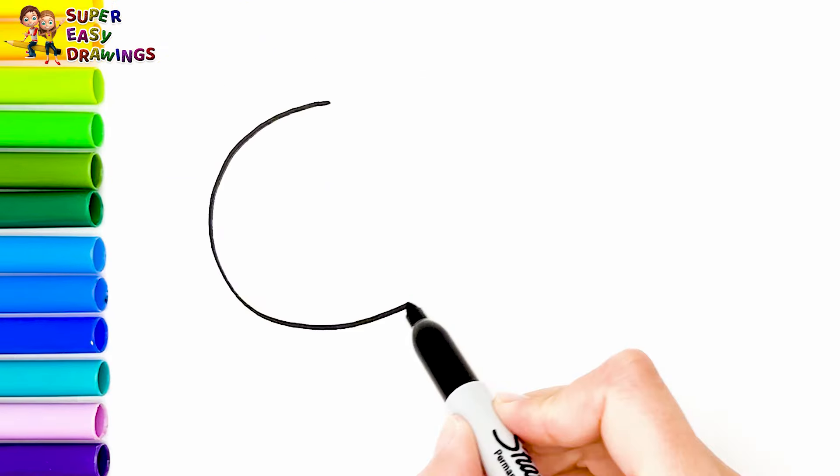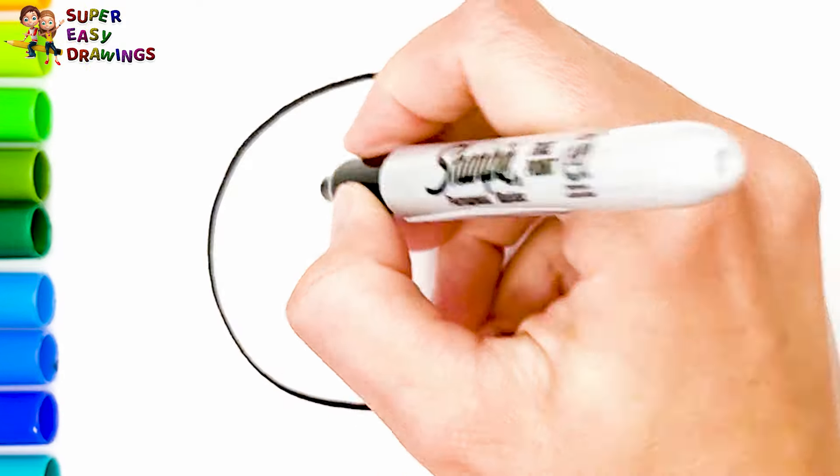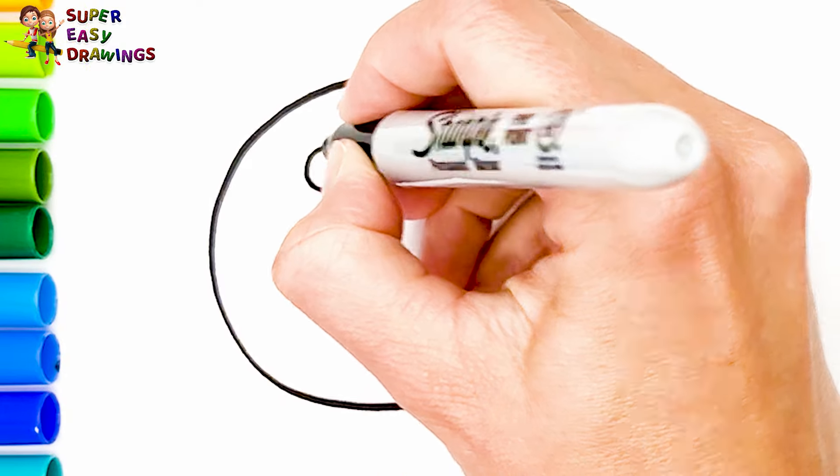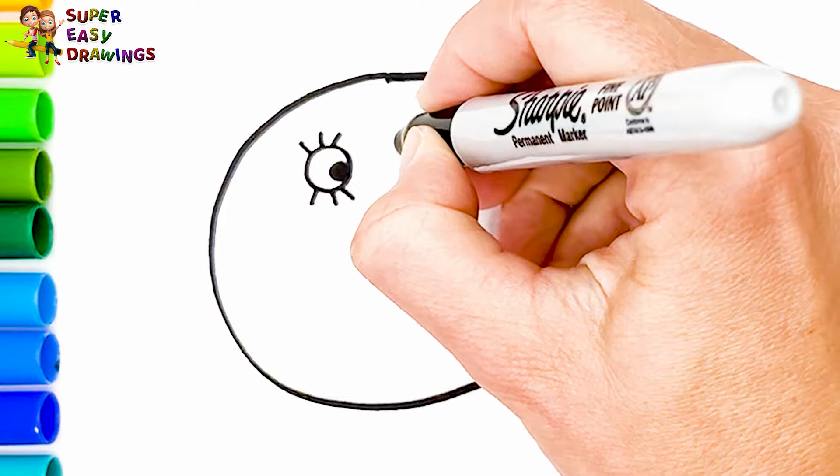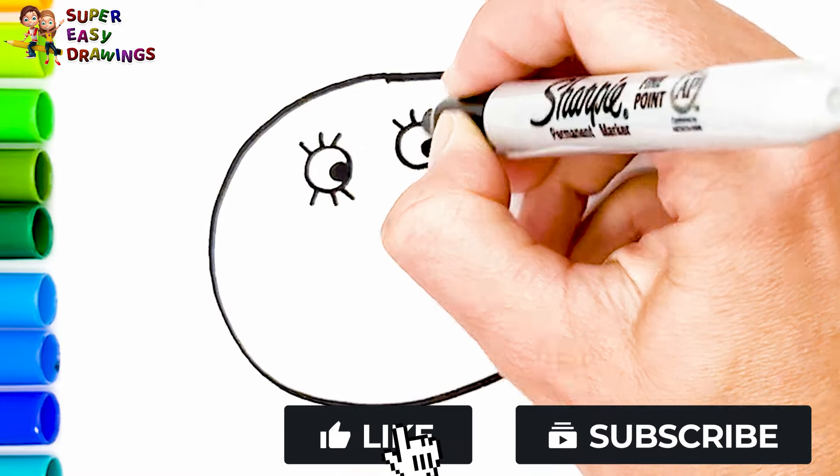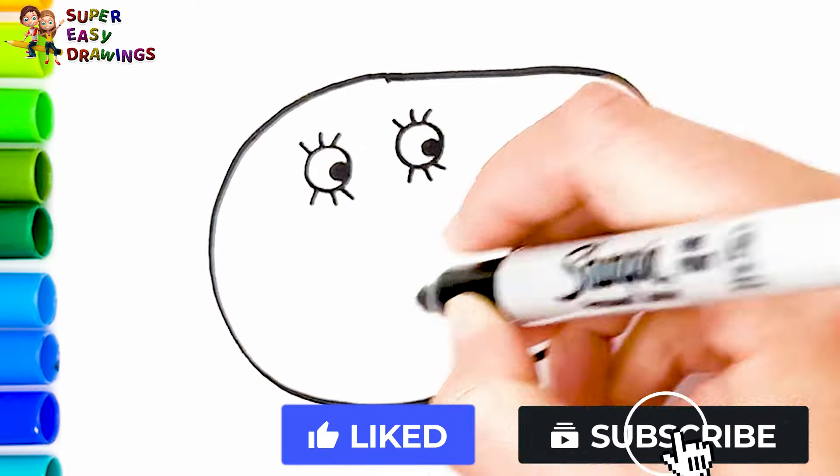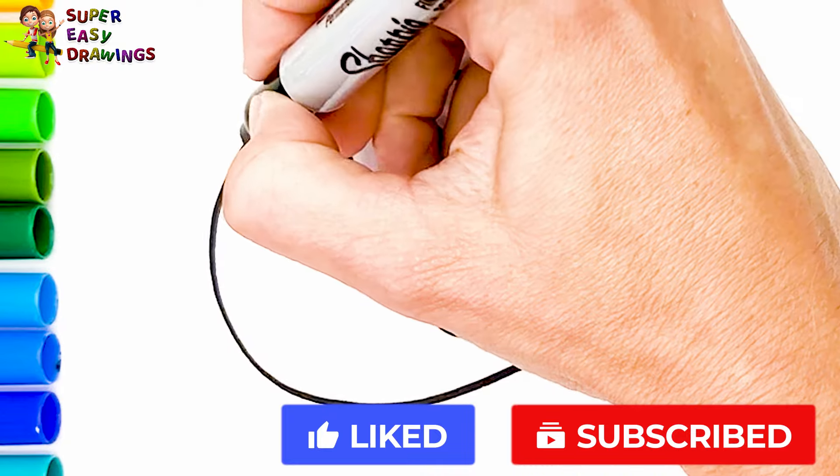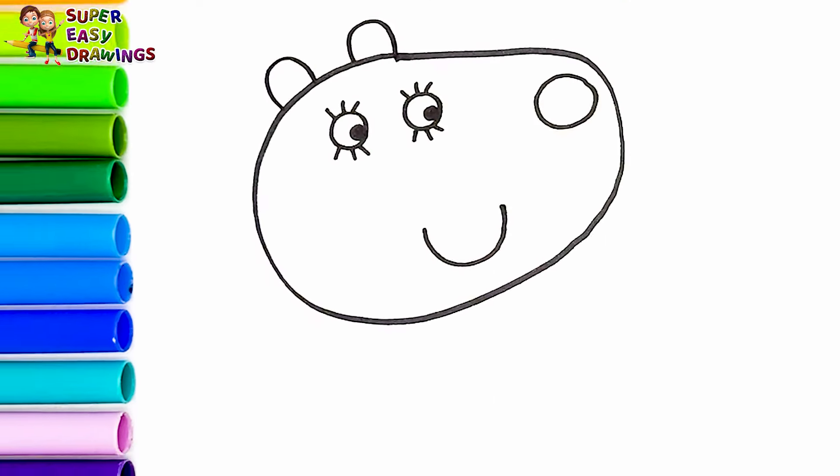At first I'm going to draw Dr. Polar Bear. I draw her head, her eyes, her nose, and her smiling mouth. Then I draw her ears.